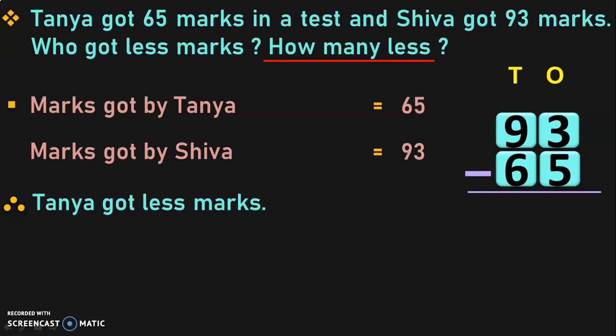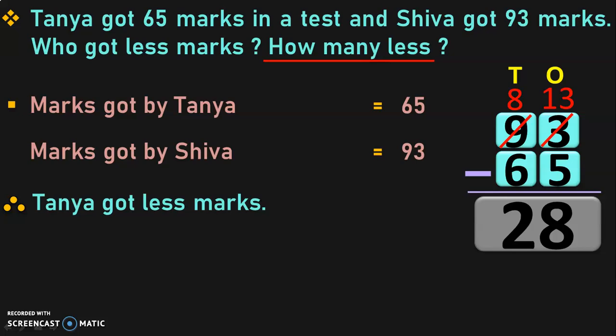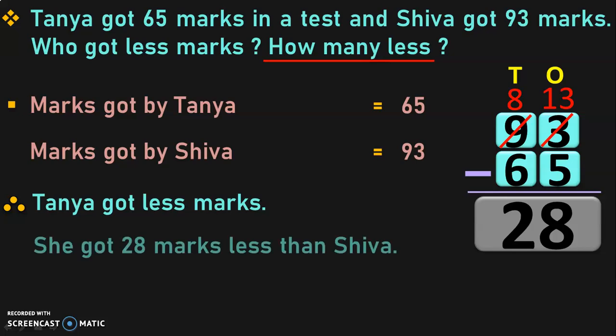Write down the place values and begin the subtraction from the ones place. 3 minus 5 cannot be done, so you move on to the tens place to borrow, where you have 9 tens which when regrouped becomes 8 tens plus 10 ones. So now in the ones place we will have 10 plus 3, which is 13 ones. 13 minus 5 is 8, and in the tens place 8 minus 6 is 2. So the answer is 28 — Tanya got less marks and she got 28 marks less than Shiva.